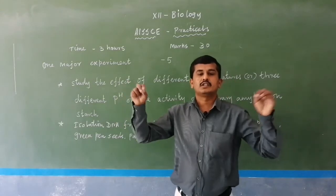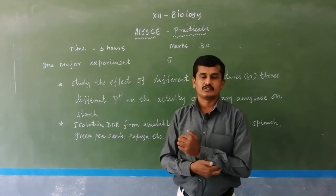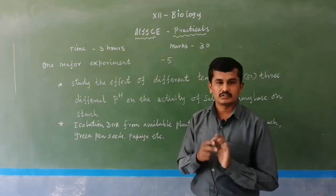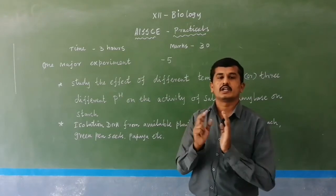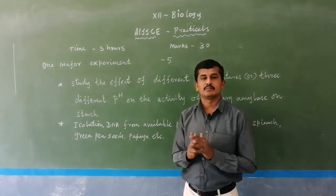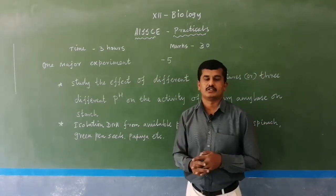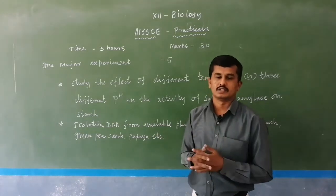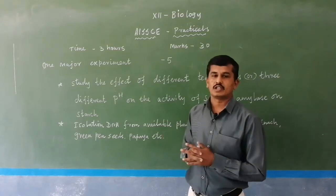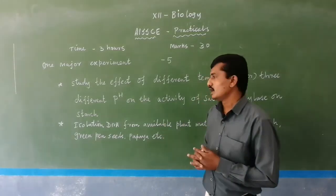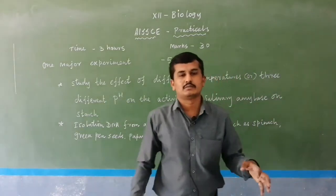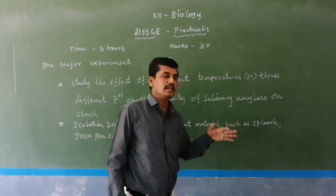That is the first major experiment. Another one uses different pH. Normally at pH 6.9 only, salivary amylase digests the starch. We take three different pH solutions — like pH 4, pH 6 or 7, and pH 9 — and prove that at pH 7 only, saliva digests the starch. I will give elaborate ideas about this practical with materials required in later classes.